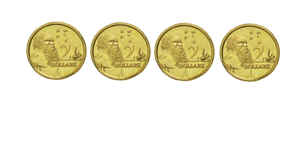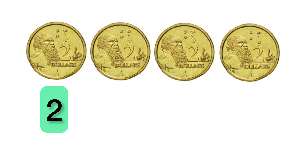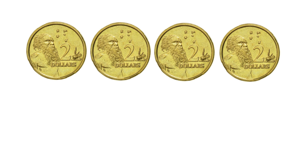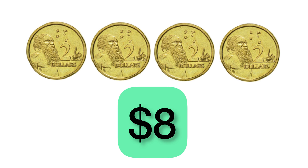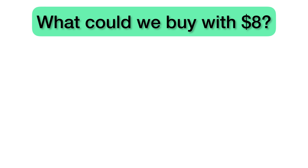Now we have two dollar coins. We're going to skip count by two to find the total. Two, four, six, eight. So all together we have eight dollars. What could we buy with eight dollars?